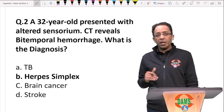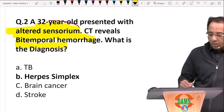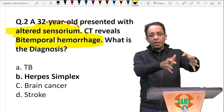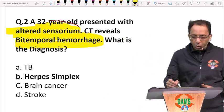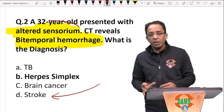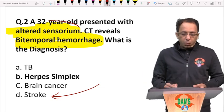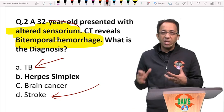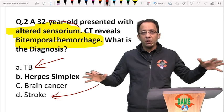The second question is indirect. The patient has altered sensorium with bitemporal hemorrhage. Bilateral temporal lobe involvement would not happen in stroke, which conforms to one vascular territory like MCA or ACA. Tuberculosis leads to basal exudates and asymmetric infarcts in the basal ganglia, but not bilateral temporal involvement.